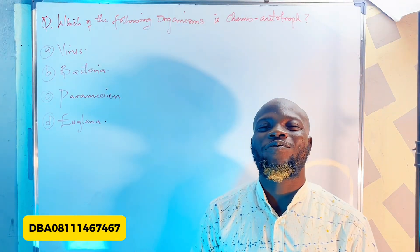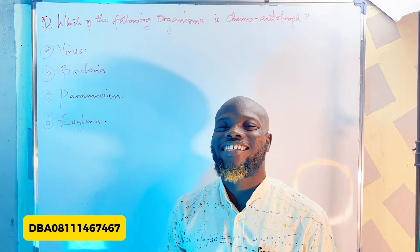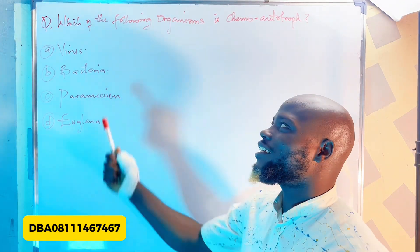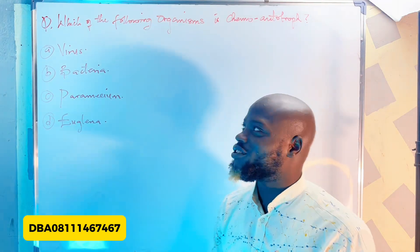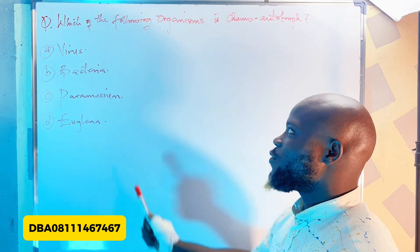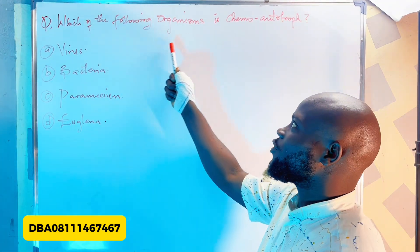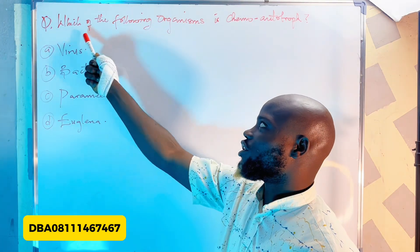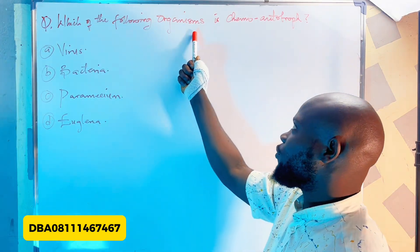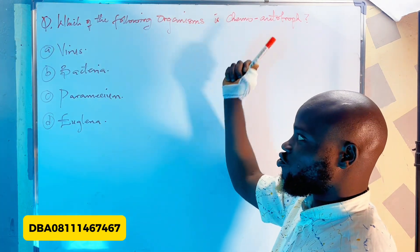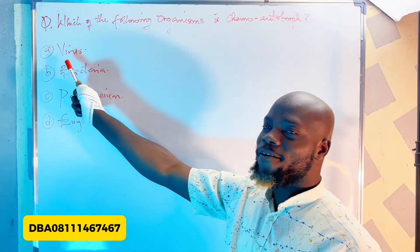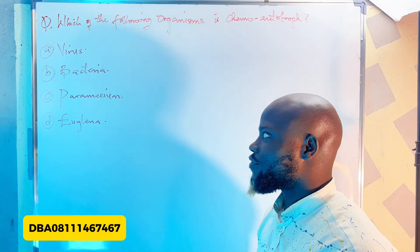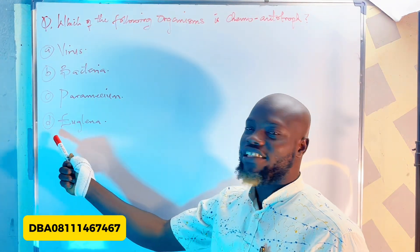Hello students, welcome to today's class. In today's session we'll be looking at this biology question: which of the following organisms is a chemo autotroph? Options are: A - virus, B - bacteria, C - paramecium, and D - euglena.